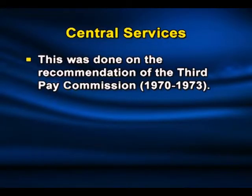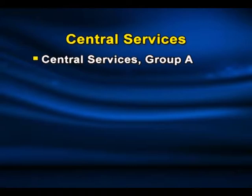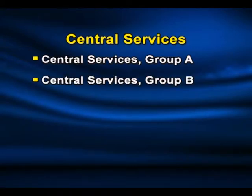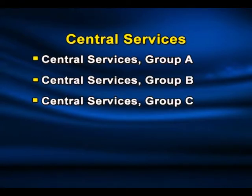Again in 1974, the classification of central services into Class 1, Class 2, Class 3 and Class 4 was changed to Group A, Group B, Group C and Group D respectively, on the recommendation of the third pay commission in 1970–73. Thus, as of now the central services are classified into four categories: Central Services Group A, Group B, Group C and Group D. The number of Group A central services has been increasing over the years — from 30 in 1971, to 49 in 1984, to 59 in 1996, the latest year for which published data is available.